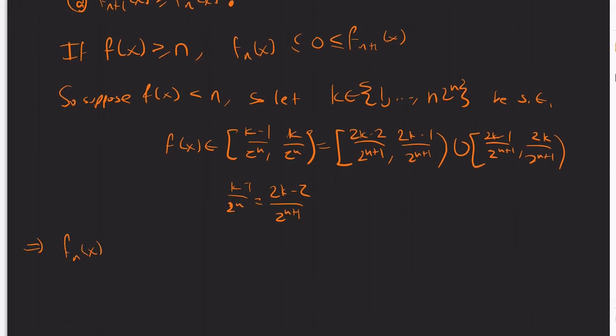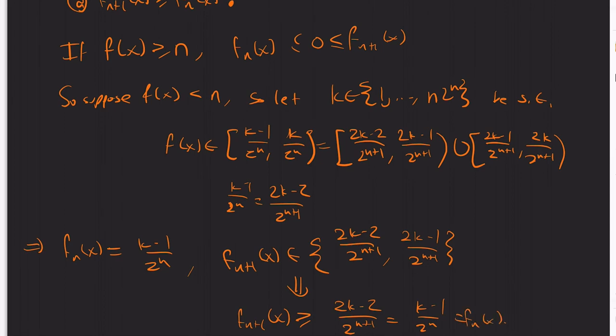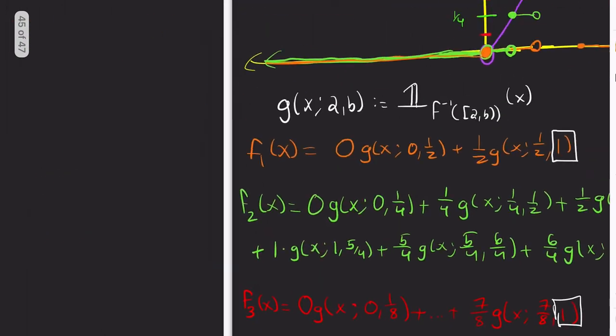So this tells me that F_N of X equals K minus 1 over 2 to the N. And F of X is in 2K minus 2 over 2 to the N plus 1, 2K minus 1 over 2 to the N plus 1. Why? Because either F of X is in this subinterval, in which case it's equal to the left endpoint, or it's in this subinterval, in which case it's equal to this left endpoint. So that tells me that F_{n+1} of X is greater than or equal to 2K minus 2 over 2 to the N plus 1, which is K minus 1 over 2 to the N, which is F_n of X. And so F_n is in fact increasing.